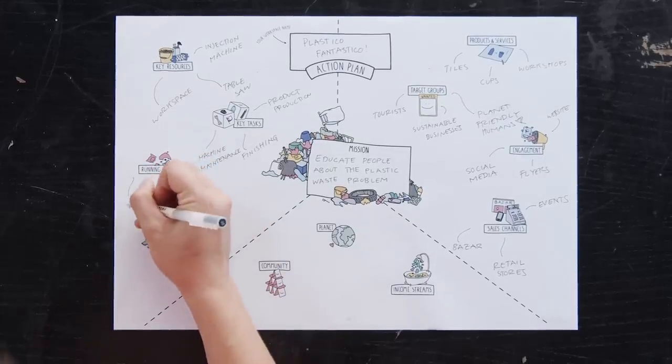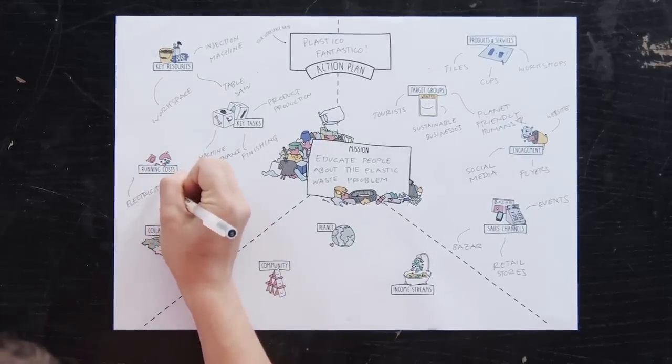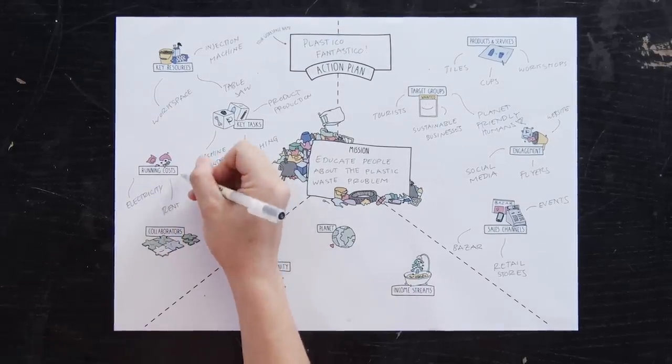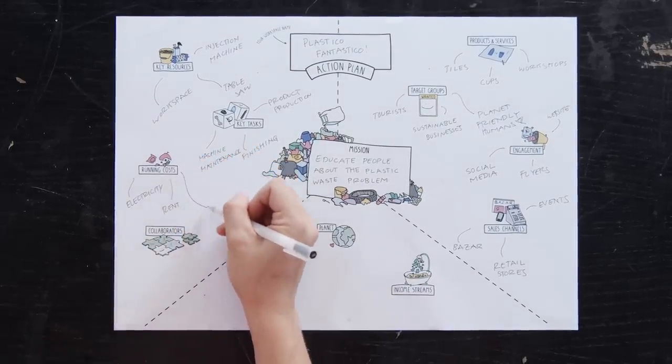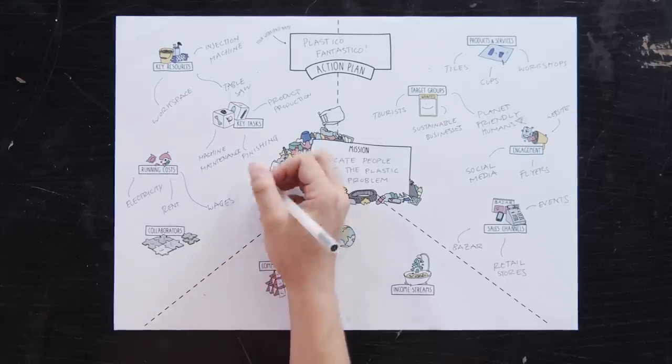Your running costs are the top three to five costs that you expect to face once your business is up and going. These are the costs that you will see every month because they come from the core ongoing operation of your business. Often in precious plastic businesses, this is the rent of your space, if you have to pay for it, electricity, and paying your employees.